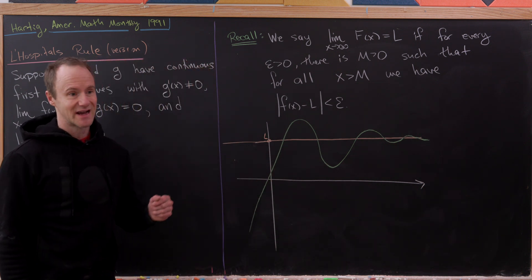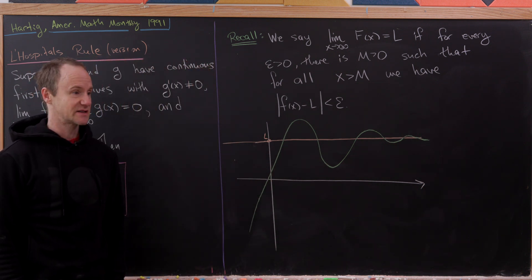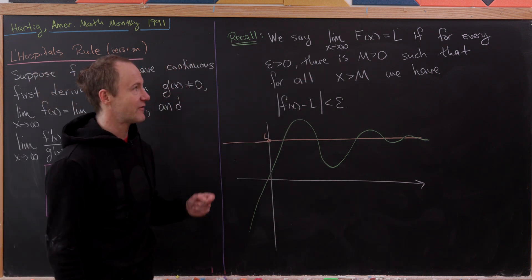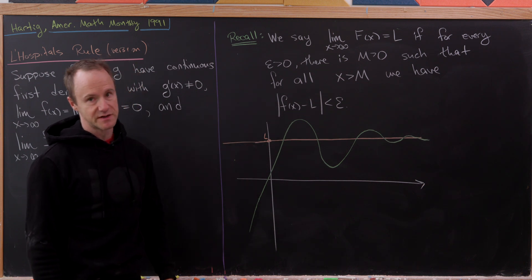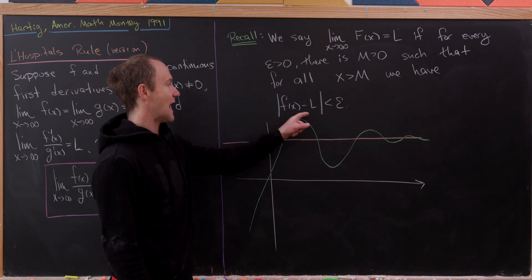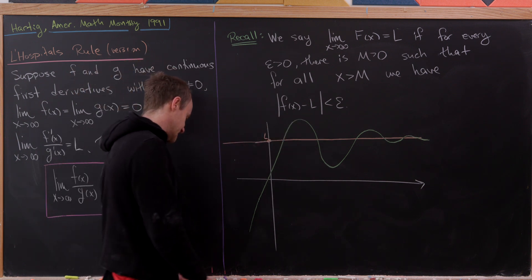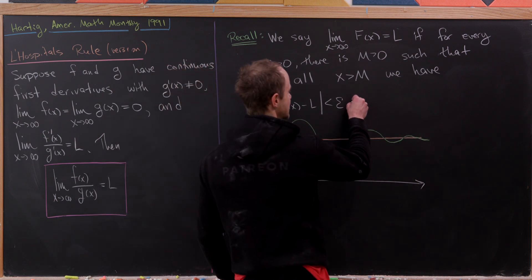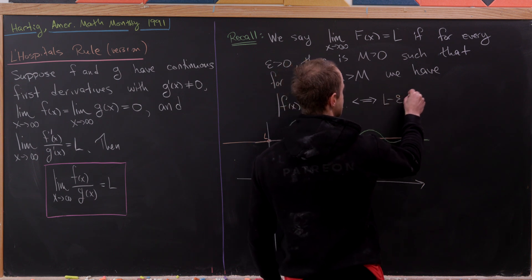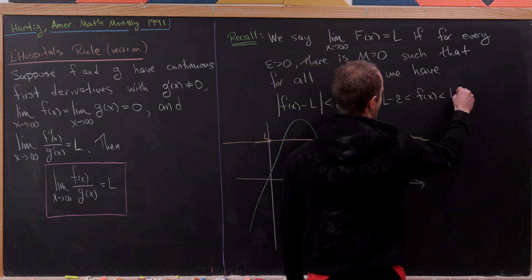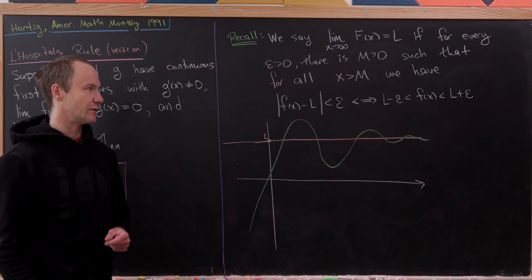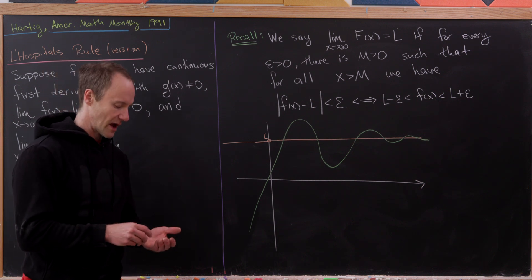We're going to use the precise definition of a limit as x approaches infinity, so let me recall that. We say the limit as x goes to infinity of f(x) is L if for every epsilon greater than zero, there is an M greater than zero such that if x is greater than M, the absolute value of f(x) minus L is less than epsilon. This inequality is the same as saying that f(x) is between L minus epsilon and L plus epsilon — we've got an epsilon band around the limit.